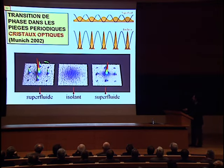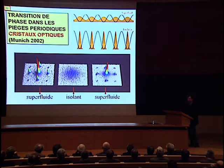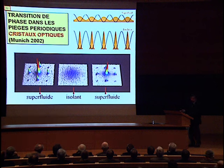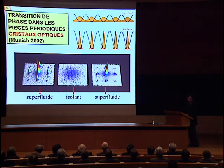Les effets d'interférence qui sont montrés dans cette image et qui sont mesurés après expansion apparaissent quand la puissance du laser est faible et le système est superfluide. En revanche, les effets d'interférence disparaissent quand la puissance du laser est grande et le système est dans la phase isolante.